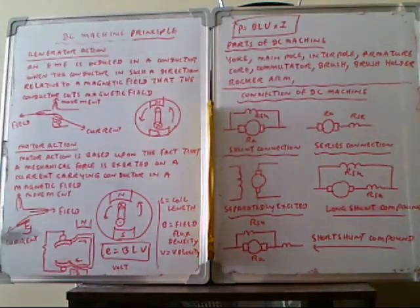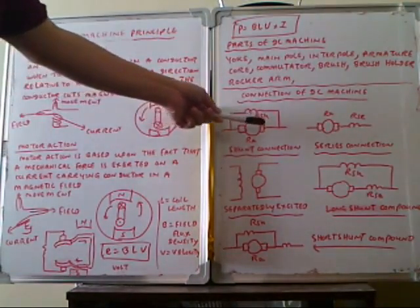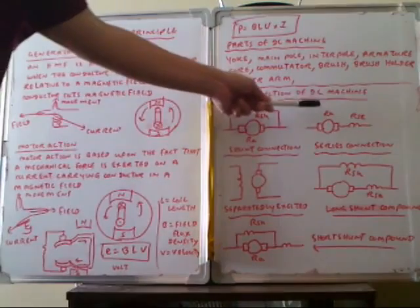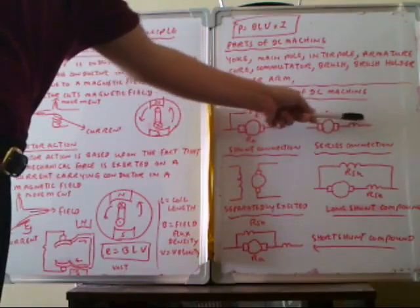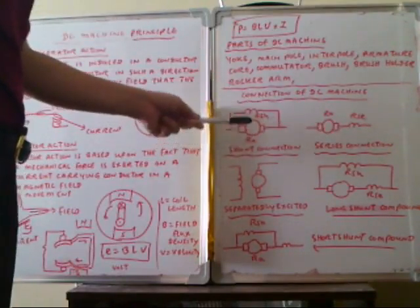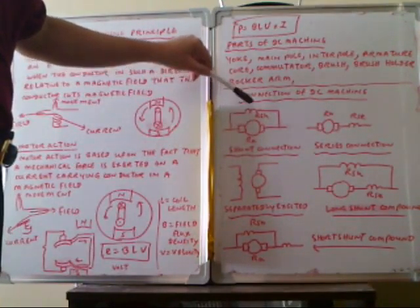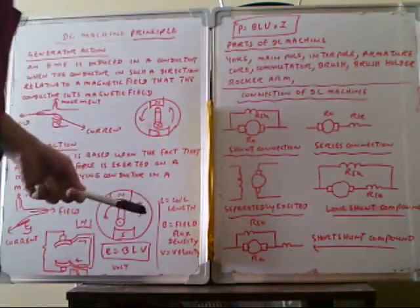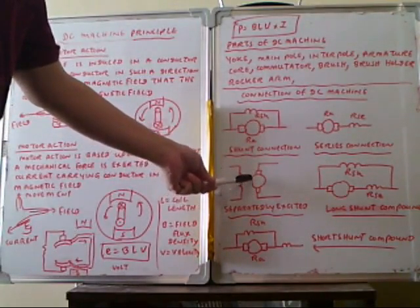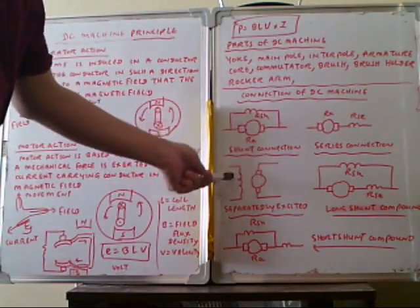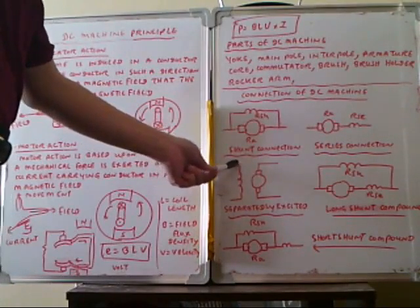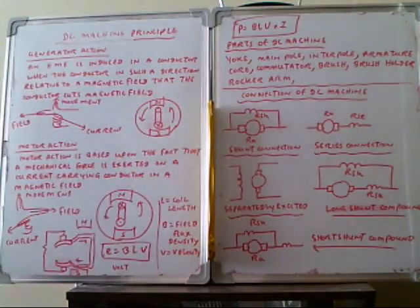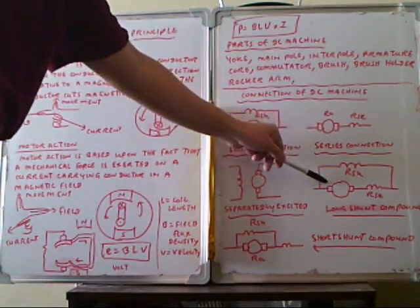This is the shunt machine, where the armature R_a and shunt field R_sh are connected in parallel. For the series machine, the armature R_a and series field are connected in series. This is the separately excited configuration, where the armature winding and field winding are not electrically connected — the field is separately supplied by an external source.